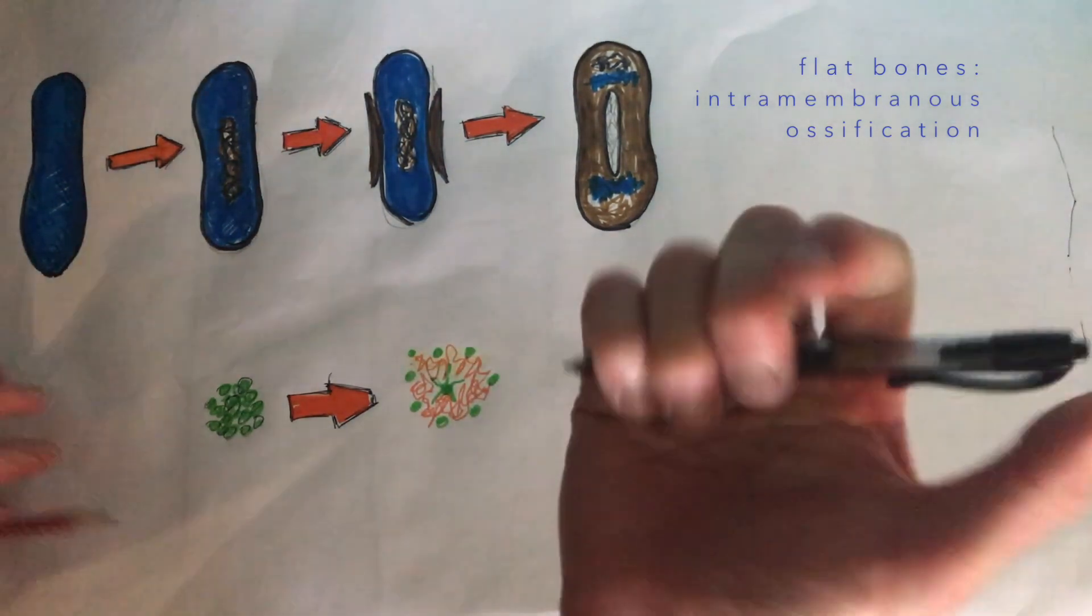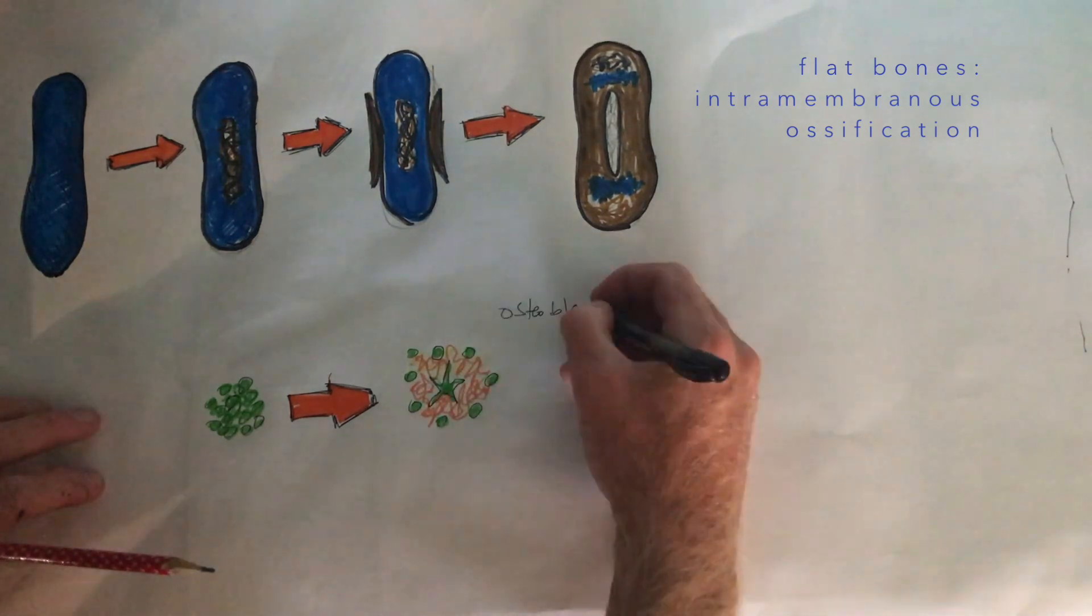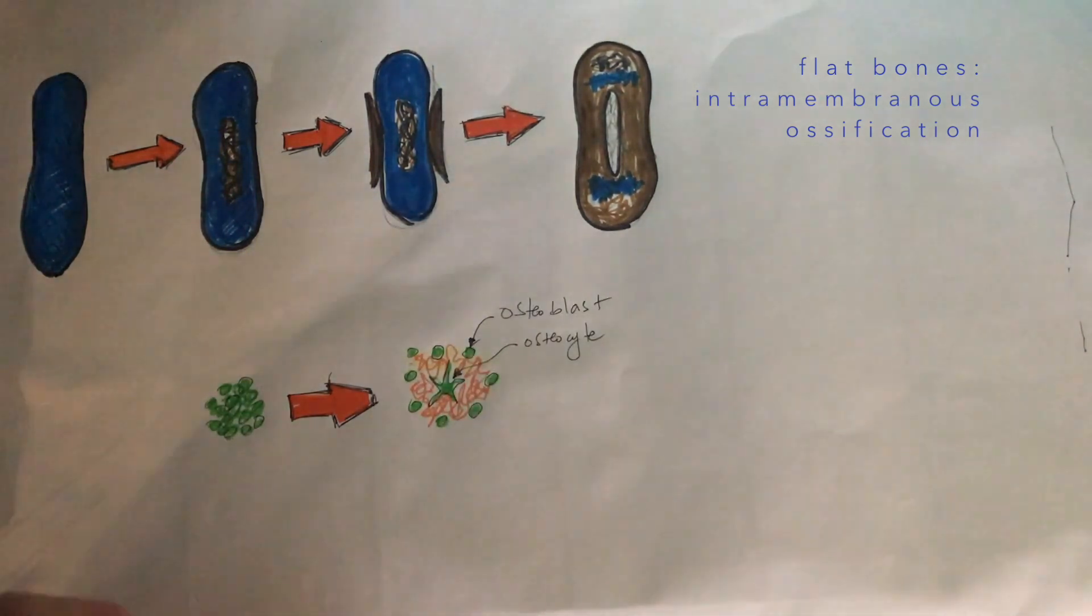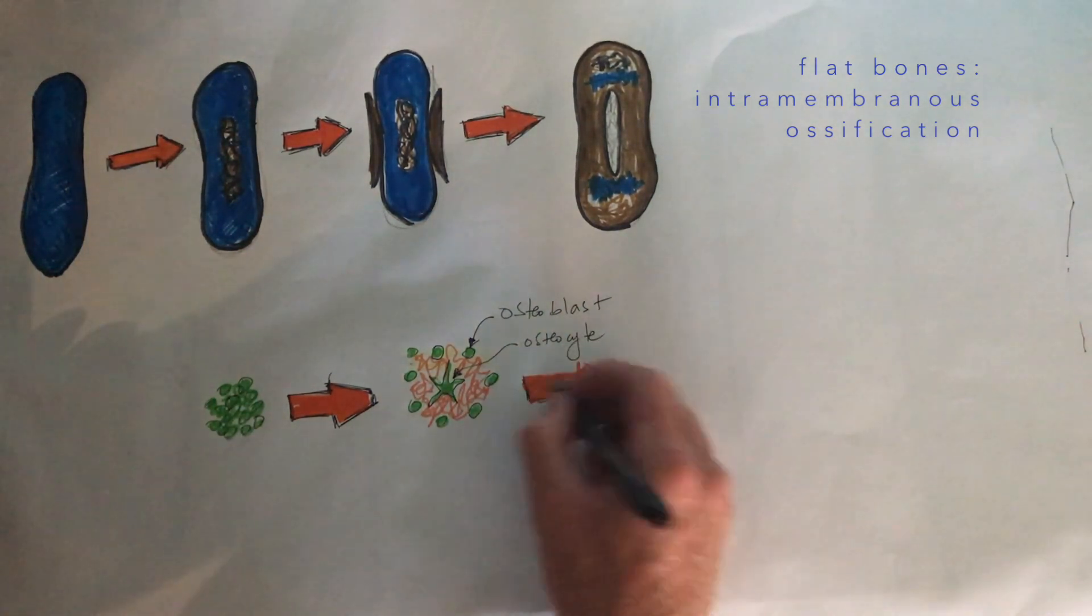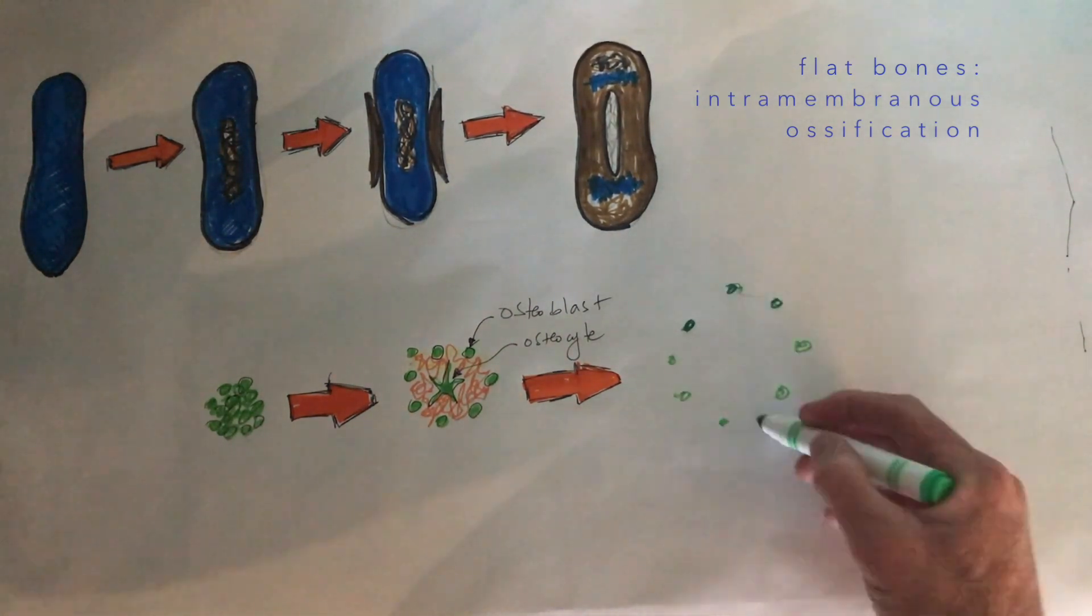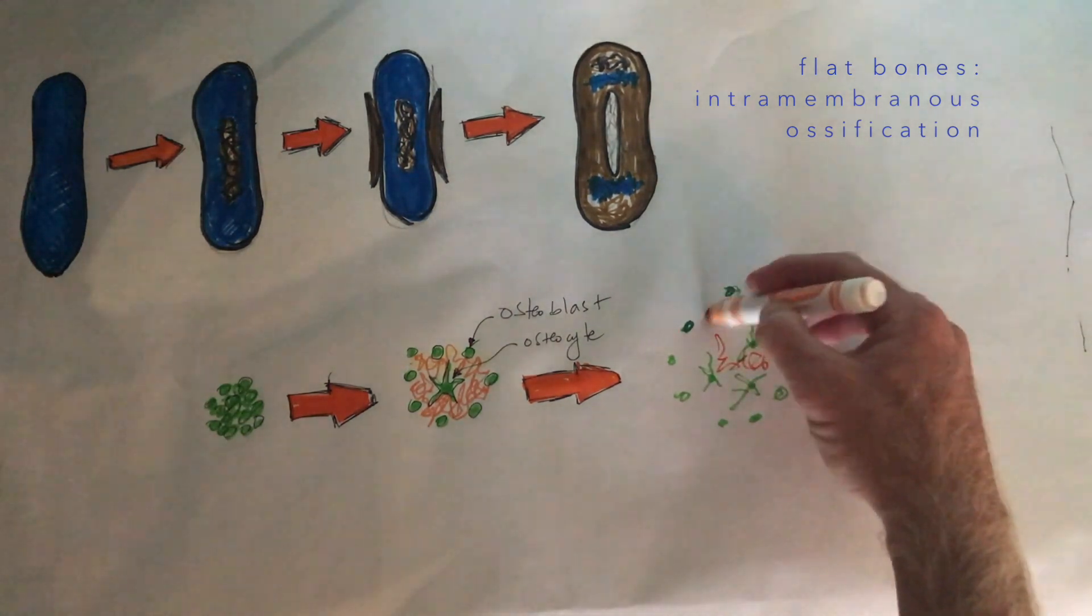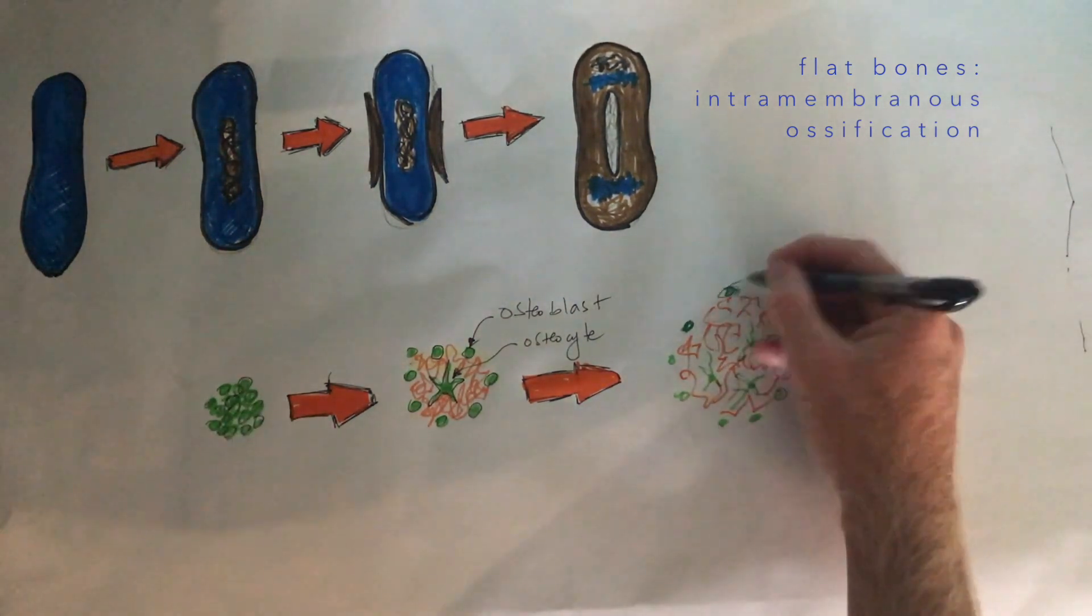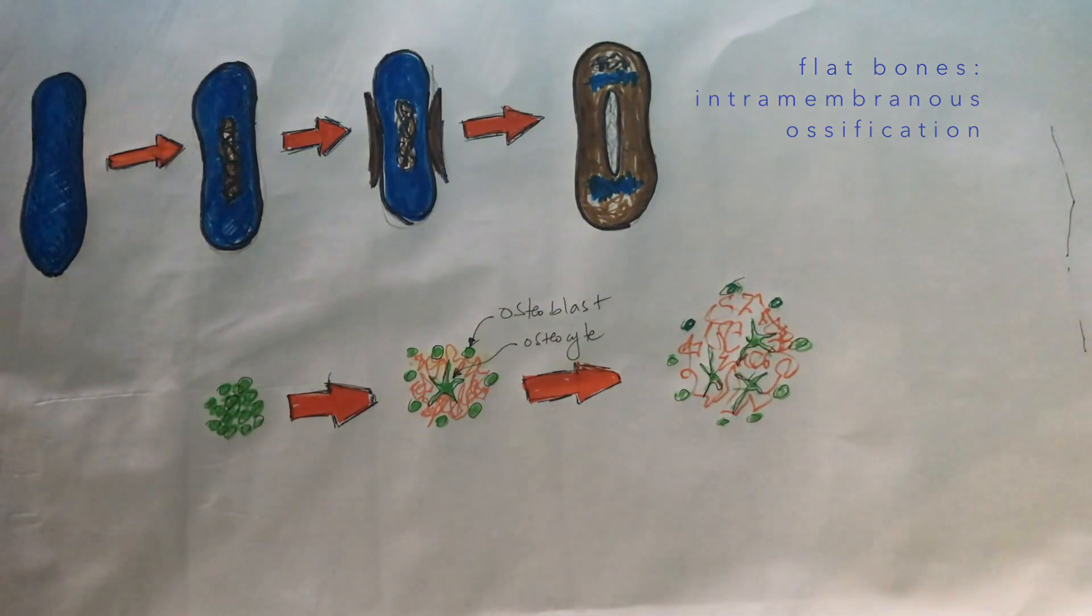This causes these osteoblasts to spread out as they secrete more and more bone tissue. Some of these osteoblasts get trapped in the bone tissue they've secreted. Once that happens, they turn into mature bone cells called osteocytes. They change shape so they have little appendages that are stretched through the bone tissue, which allows them to monitor the stresses occurring nearby. This continues to happen until the flat bone is fully formed. It's a slow process that starts from a very small group of cells secreting bone tissue.